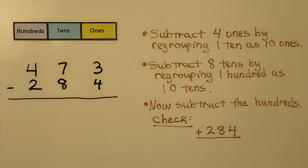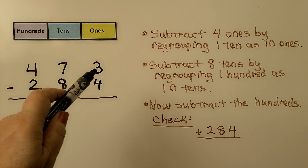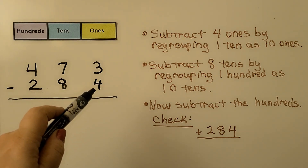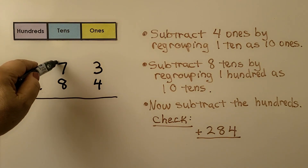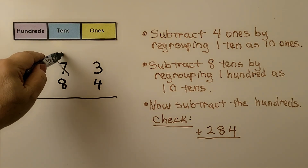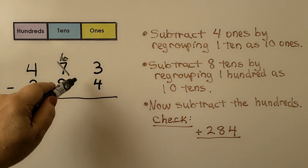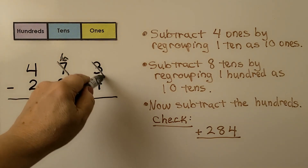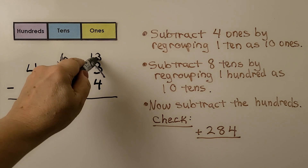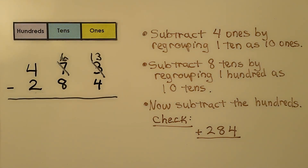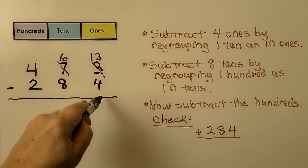Let's try another one: four hundred seventy-three minus two hundred eighty-four. We look at the ones place. We have three and we need to take four away — we don't have enough, so we're going to regroup. This seven tens is going to become six tens, and we give it to the ones place as ten ones. So instead of three ones, we have thirteen. Thirteen minus four is nine ones.